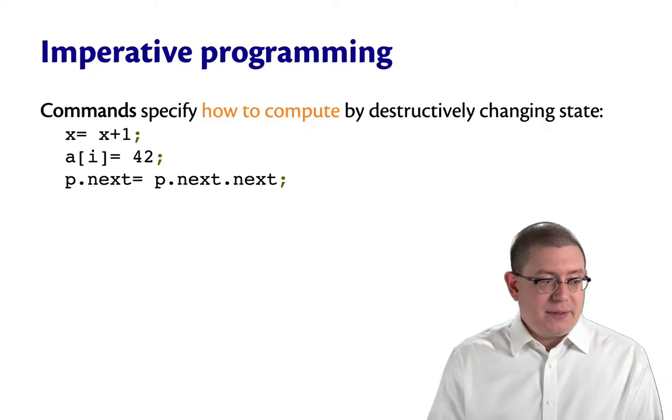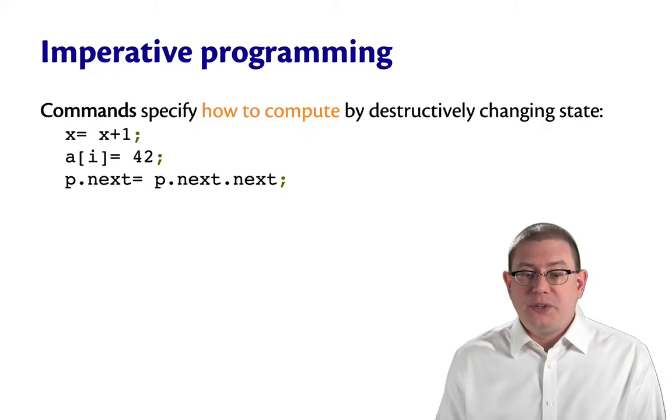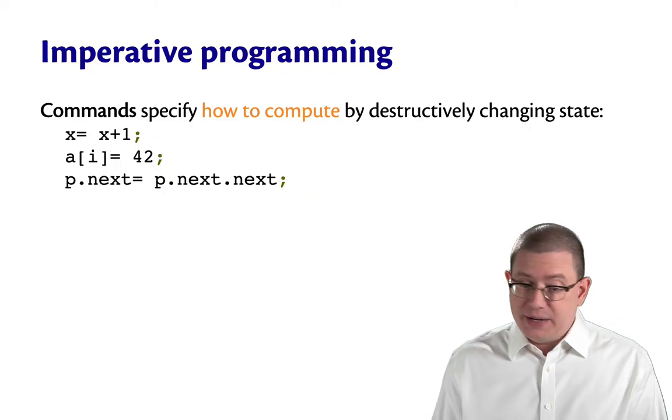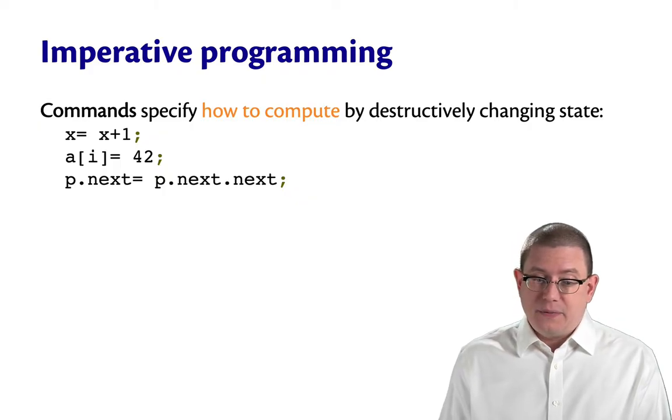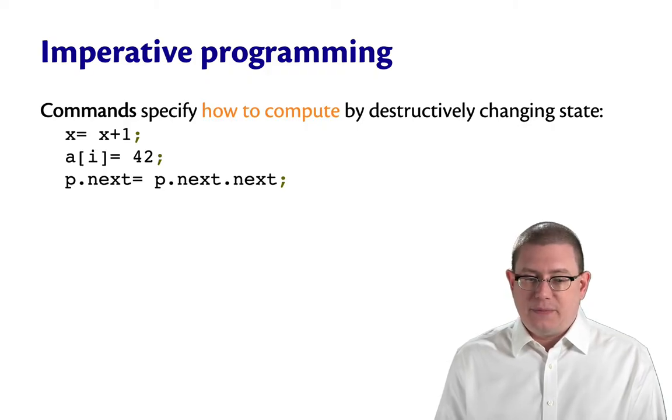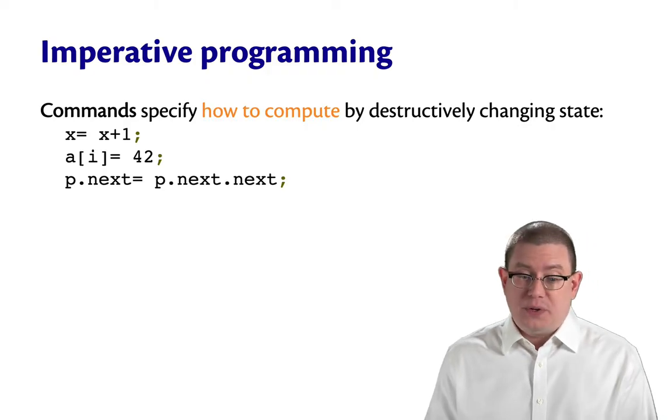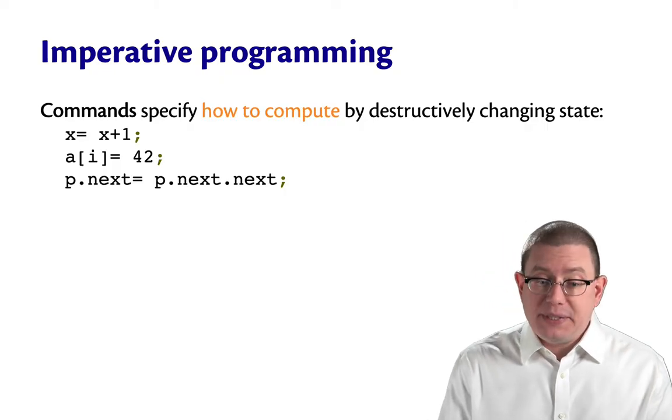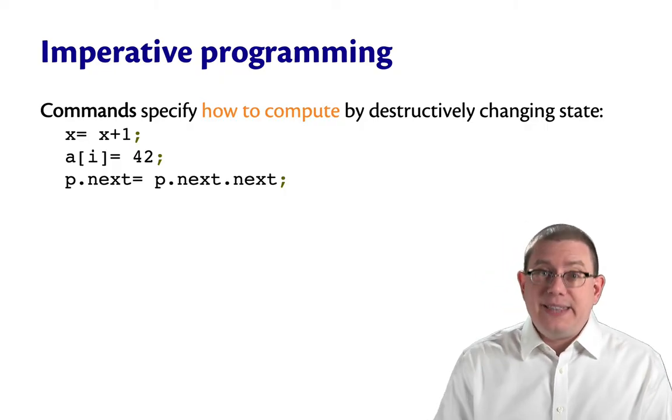An array update, like a sub i becomes 42, or a pointer change, like p.next becomes p.next.next. Those are also examples of commands that change the state. They're saying how to compute. What I want the computer to do with each of those is to update some bits in memory that I've given a name to.